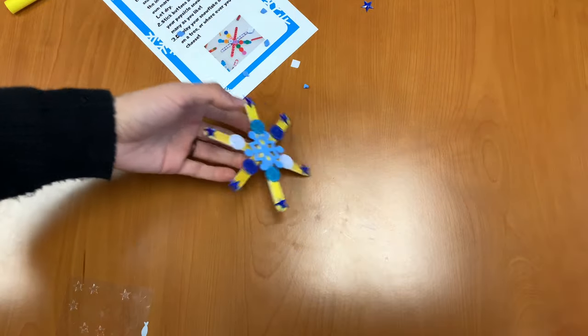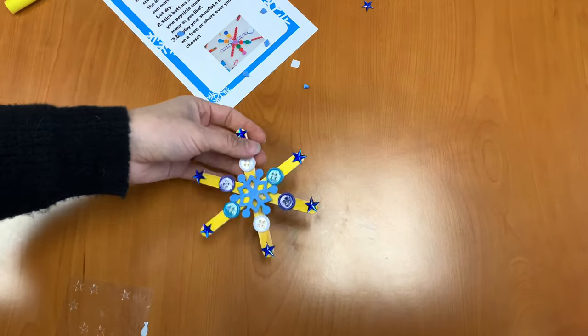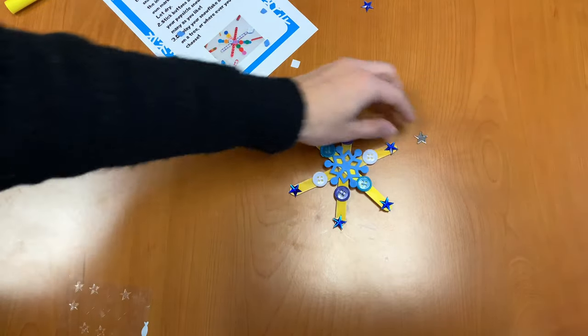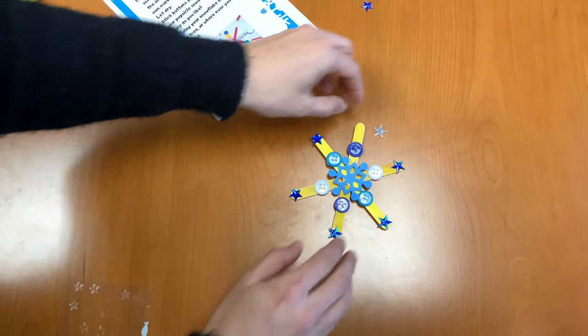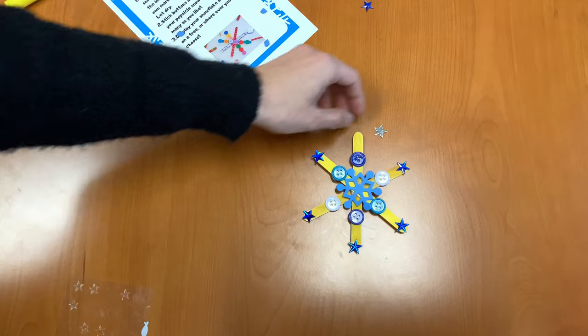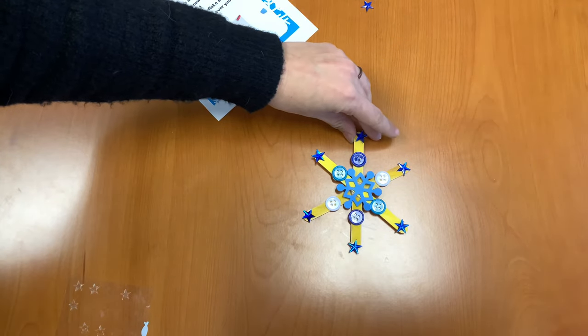Very nice. Very beautiful. I'm going to put some string on this and put this on my tree. You can put it on your wall. Oops. You can put it wherever you like. I'm going to have to glue that piece back on there. But that is all that we do to make our snowflakes.